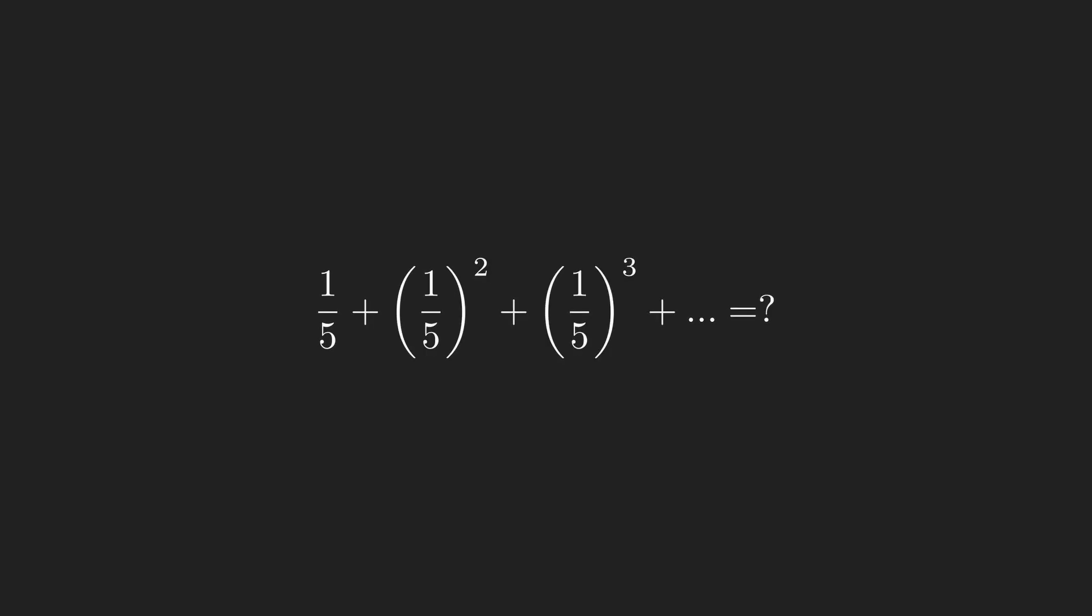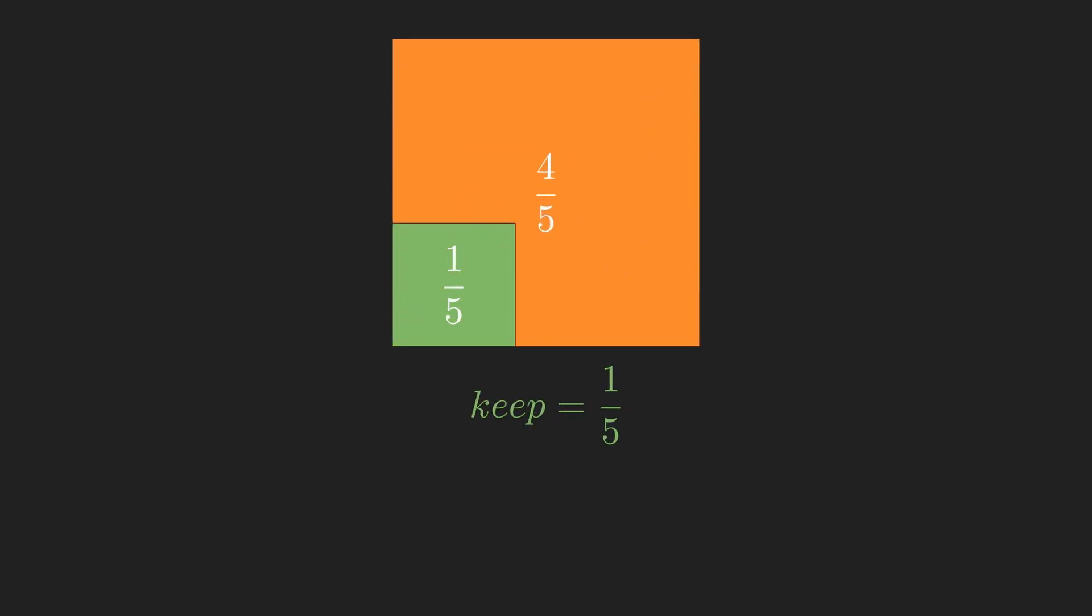We can start with a square with area 1, and take out a chunk of size 1 fifth. In effect, we're trying to rebuild our original series, so this chunk will add to some keep pile.